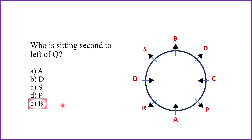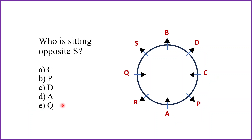Who is sitting opposite to S? Opposite position to S is P, so P is sitting opposite to S. Option B is our answer — and we got the correct answer again.